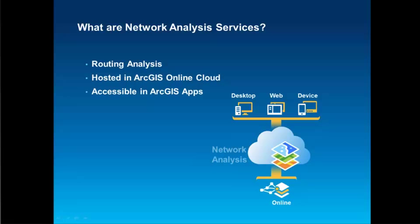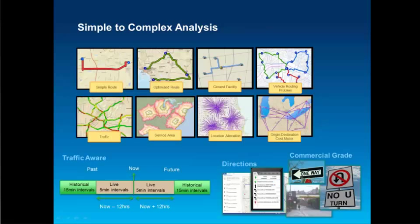Network analysis capabilities can be accessed through the web by connecting to ArcGIS Online. Anyone with an ArcGIS Online account can simply connect to these cloud services. That connection can be made in any ArcGIS application, whether it's in desktop, a web app, or on a mobile device. Network analysis includes simple point-to-point routing, but it also includes complex optimization for multiple vehicles and allows us to strategically locate a facility or create drive time areas.